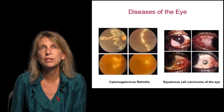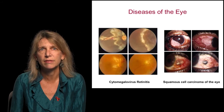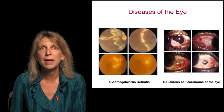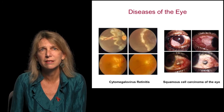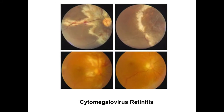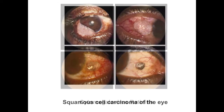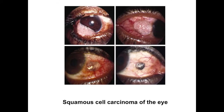AIDS conditions also include diseases of the eye. Cytomegalovirus retinitis presents with painless visual loss, and on fundoscopic exam is characterized by a ketchup and cottage cheese appearance. Squamous cell carcinoma of the eye is exclusively seen in sub-Saharan Africa, and presents as lesions on the sclera.